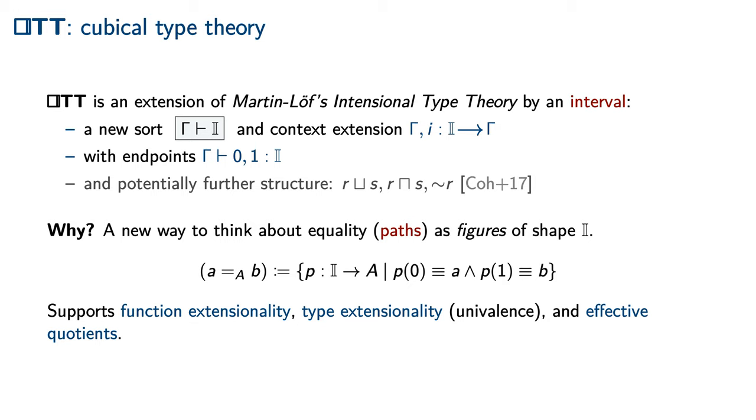Cubical Type Theory supports an additional extensionality principle for the universe of types itself. In particular, two types are identified by cubical equality exactly when they are equivalent or isomorphic in an appropriate sense. Type extensionality restricts to propositional extensionality, which has the important consequence that well-behaved or effective quotient types can be interpreted.